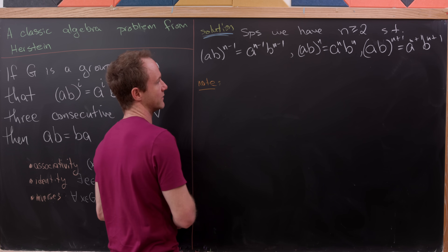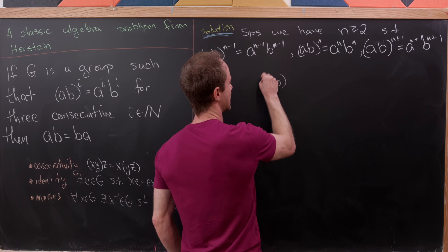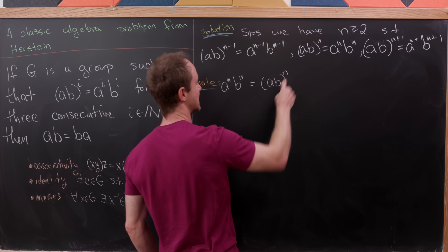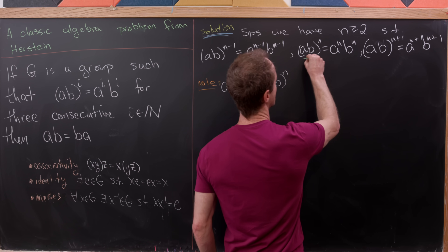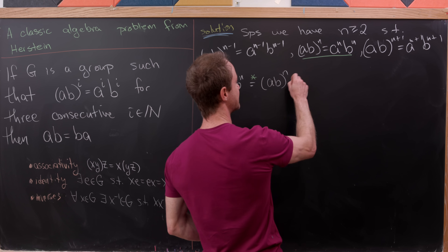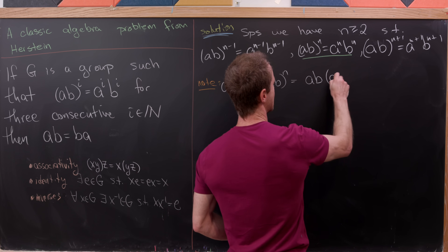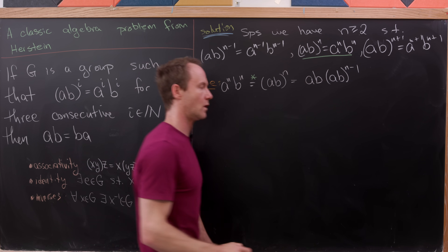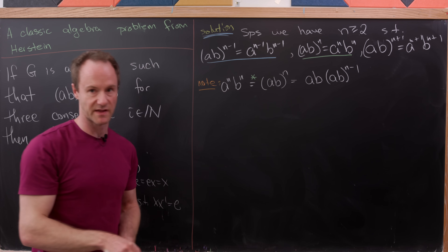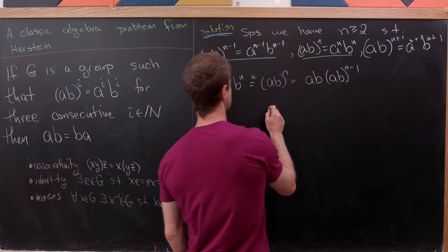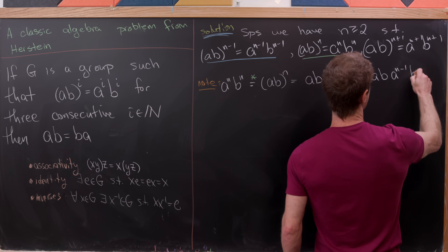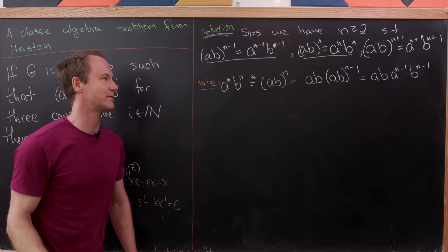Now we're ready to do some calculations. Let's note the following: we can take (AB)^n and write it as A^n times B^n by our second rule. But we can also split this apart and write it as (AB) times (AB)^(n-1). Then we apply our first rule to that second batch of terms, giving us AB times A^(n-1) B^(n-1).